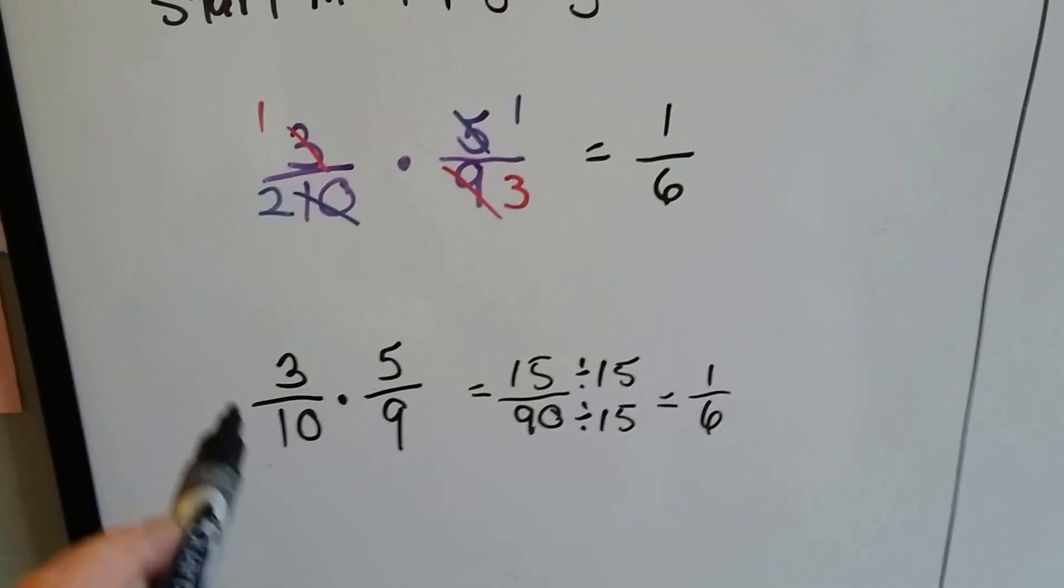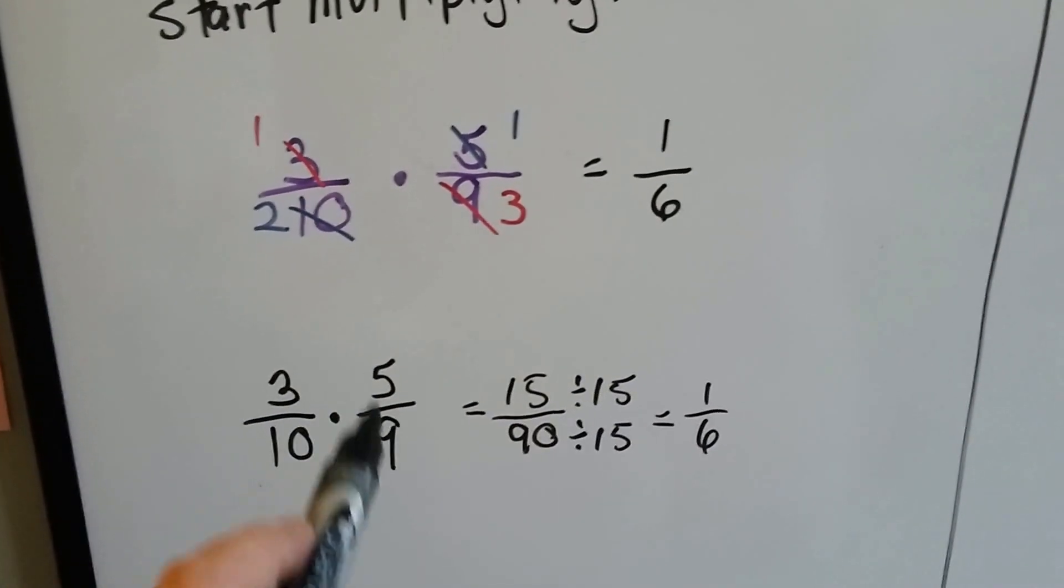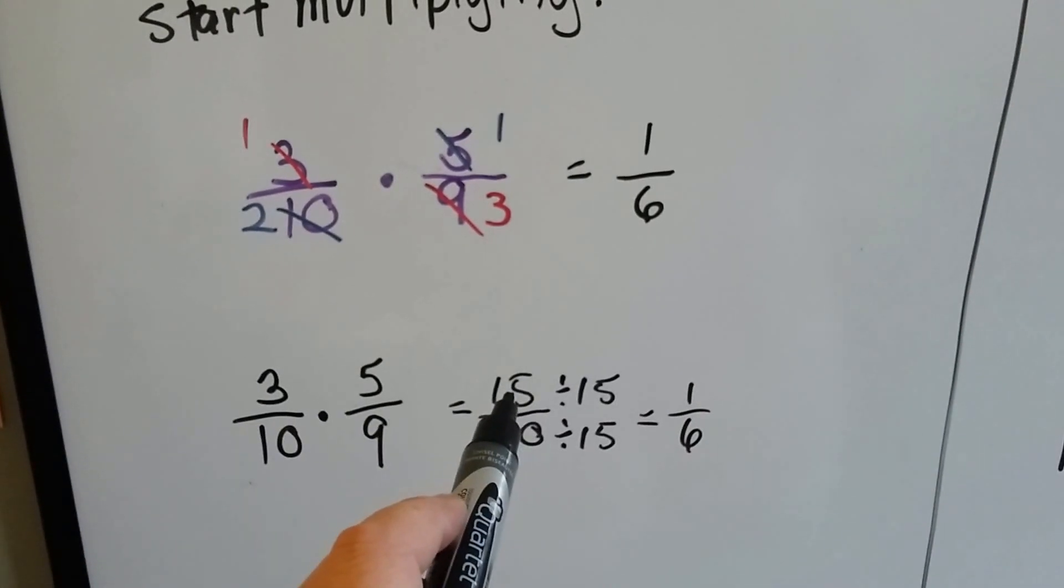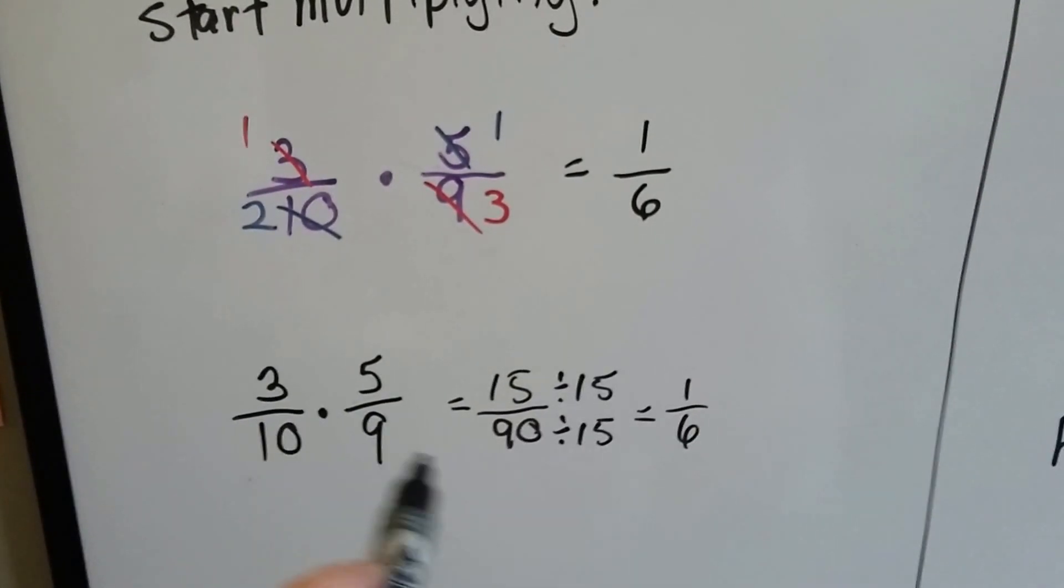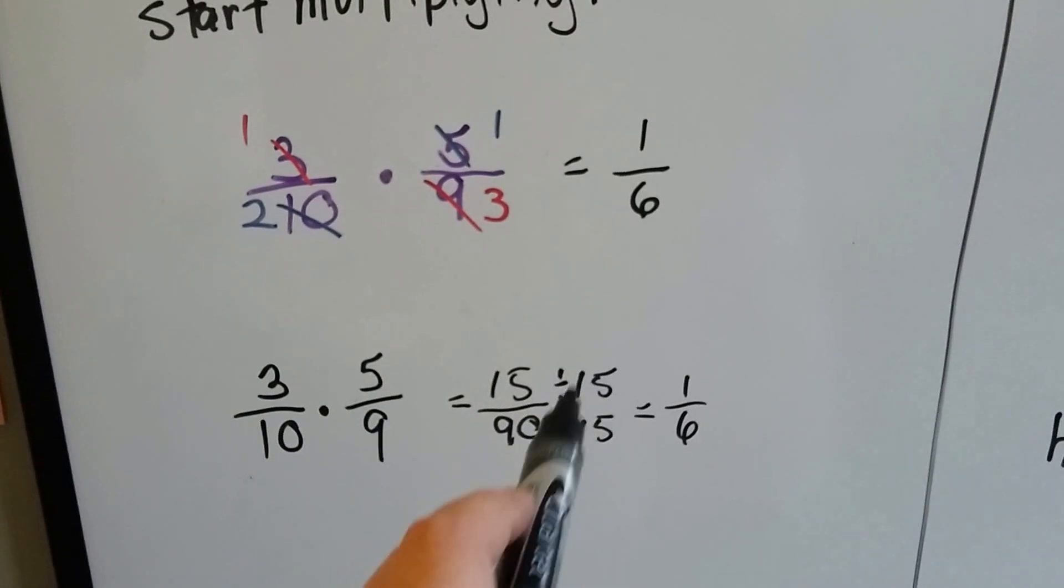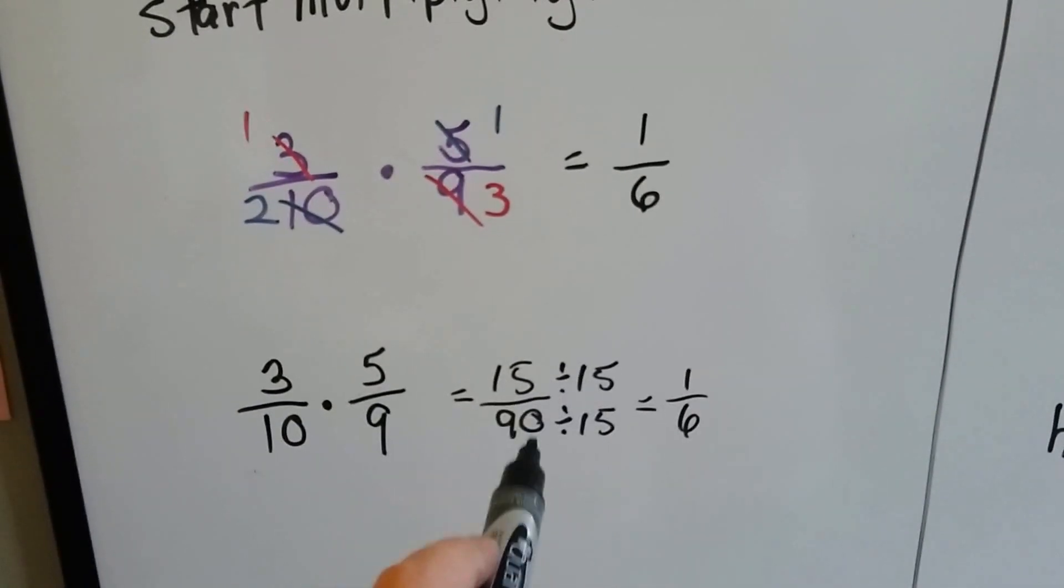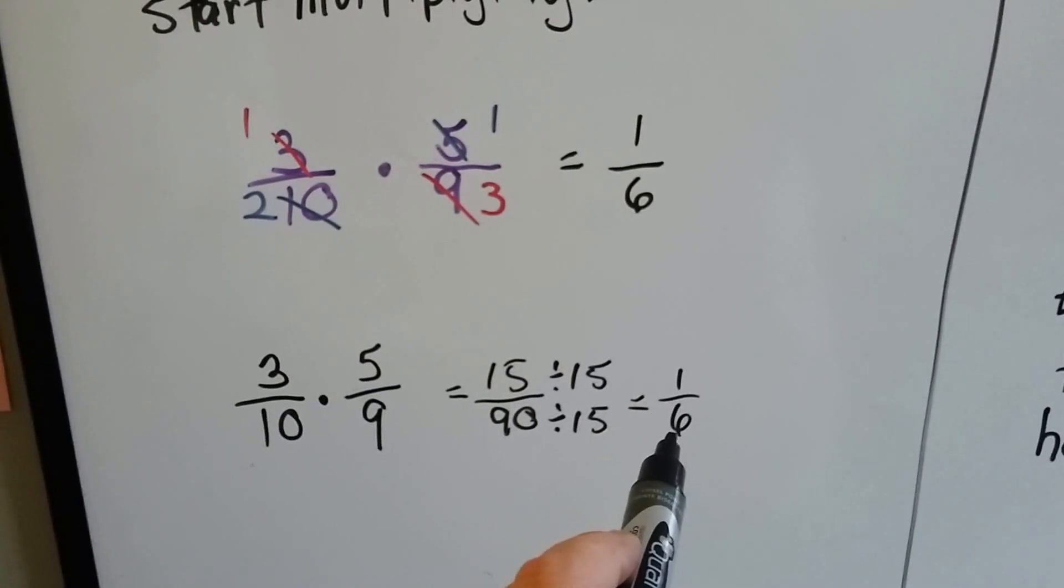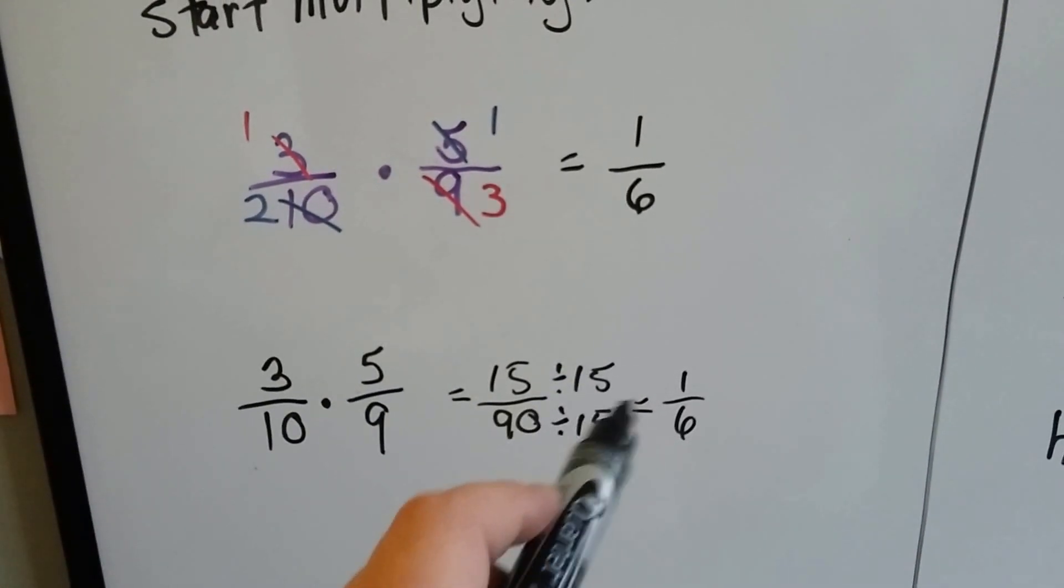If we didn't do that and we had 3/10 times 5/9, which is the original problem, we would have gone straight across and our product would have been 15 over 90. We would have hoped to know that 15 could fit easily into 90 and that we could divide by that to get the 1/6.